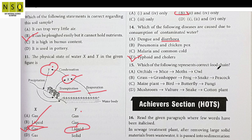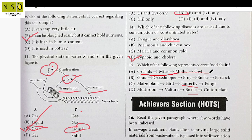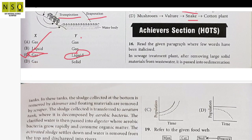Question 15: Which of the following represents the correct food chain? Options given include: orchid → moth → owl; grass → grasshopper → frog → snake → peacock; maize plant → bird → butterfly → fungi → mushroom → vulture; snake → cotton plant → butterfly → fungi. The correct food chain is grass → grasshopper → frog → snake → peacock, as this follows a proper sequence of producers and consumers.